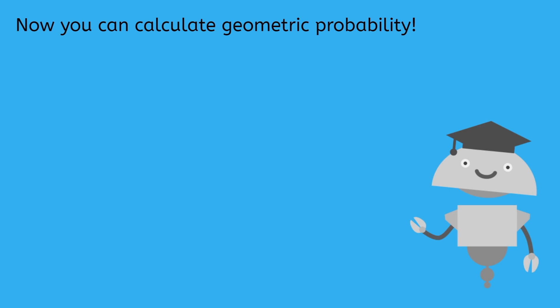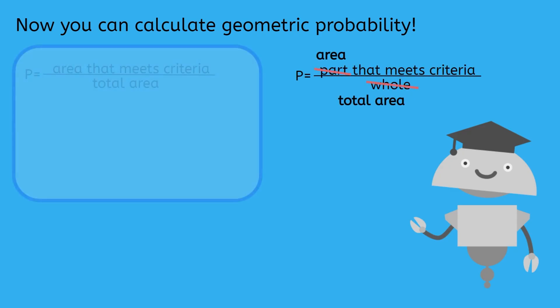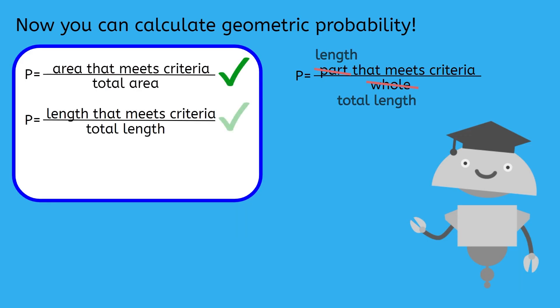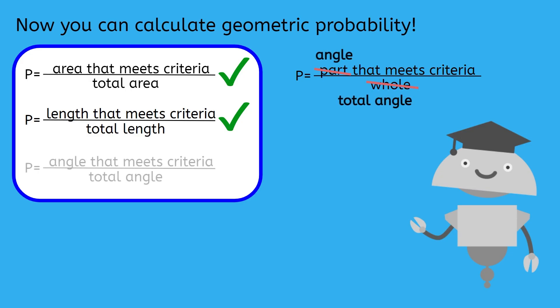Now you can calculate geometric probability. Our general formula for geometric probability can work for area, length, and angles for sectors in a circle. Good luck on your practice questions, and I'll see you next time!